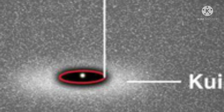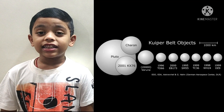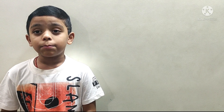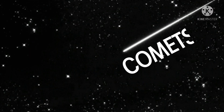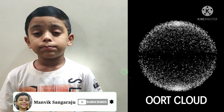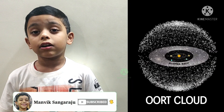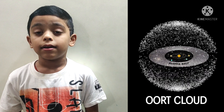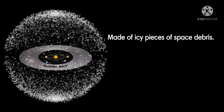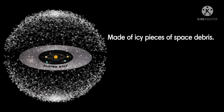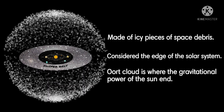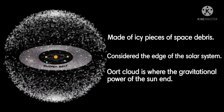Our solar system extends much farther than the eight planets, which includes the Kuiper Belt that lies past Neptune's orbit. It has icy bodies, almost all smaller than Pluto, and it is the birthplace of many comets. Beyond the Kuiper Belt is the Oort Cloud, a giant spherical shell that surrounds our solar system, made of icy pieces of space debris. It is considered the edge of the solar system since that is where the gravitational power of the sun ends.